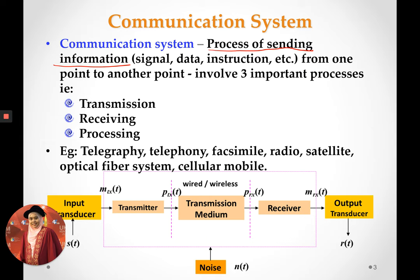Looking at the block diagram, information is first input into a transmitter. Inside the transmitter, a process occurs so that the information can be transmitted via a transmission medium — either using cables or without cables, such as radio frequency. The receiver then receives the delivered messages from the transmitter and processes the signal again so that the information can be extracted.